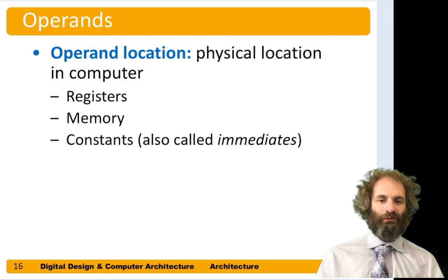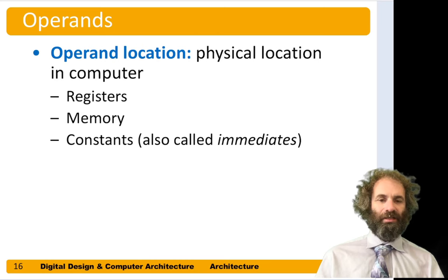Registers are where we have a small set of information, usually stored in flip-flops or a register file, that can be accessed very quickly. Memory is usually built with SRAM or DRAM, and it has a larger capacity but also a longer access time. And constants are also known as immediates — they are physically in the instruction itself, so they're hardwired into the instruction.